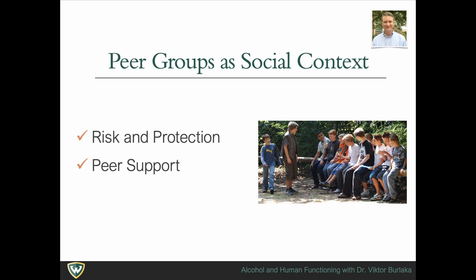Parents can steer the future of their children by providing or limiting access to certain peers. Some parents who live with substance abuse may not know the whereabouts or acquaintances of their children, while other parents maintain strict control and supervision. Some families send children to private schools with quality education and opportunities, while other families can barely afford renting in low-income neighborhoods with lower-quality schools and fewer opportunities.